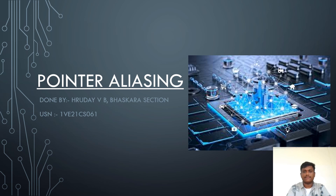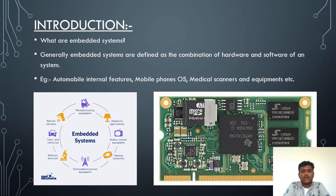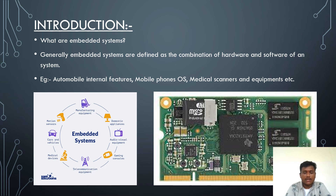Let us see the introduction. Coming to the introduction, we will see what embedded systems are. Generally, embedded systems are defined as a combination of hardware and software. Examples include automobile interfaces, mobile phone OS, medical scanners, and more. Here we can see the users of embedded systems and the circuit of an embedded system.